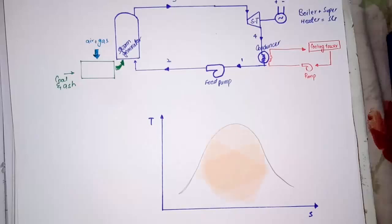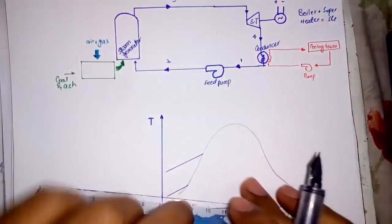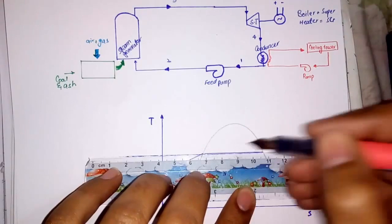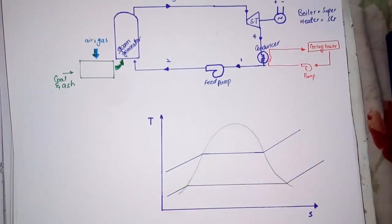The region under the dome is the wet region, where both phases simultaneously exist — that is, water and steam. In the TS diagram, this line shows constant temperature, this line shows constant entropy, and this line shows constant pressure. You can see the pressure line in the wet region is straight.